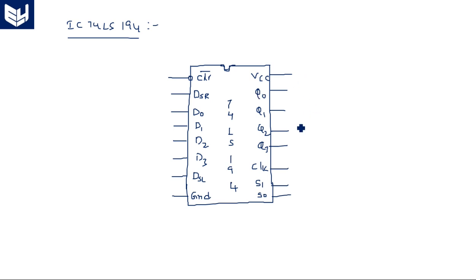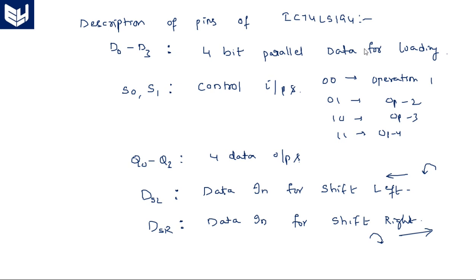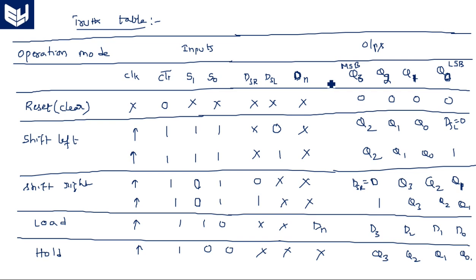This is the IC diagram which consists of 16 pins. These are the pin specifications — what each and every pin specifies and their description. This is the truth table. Up to this part I have explained in the previous video, so now let us recall the truth table so that we can move forward to the decoding.